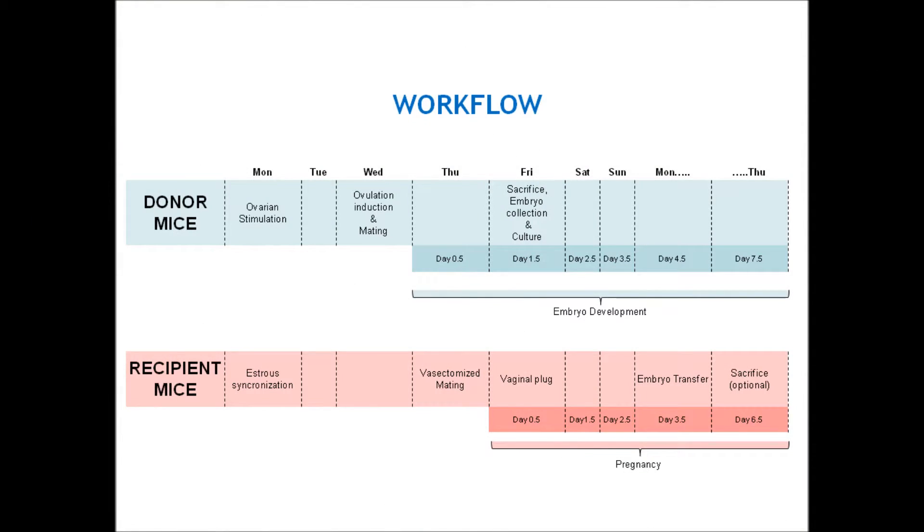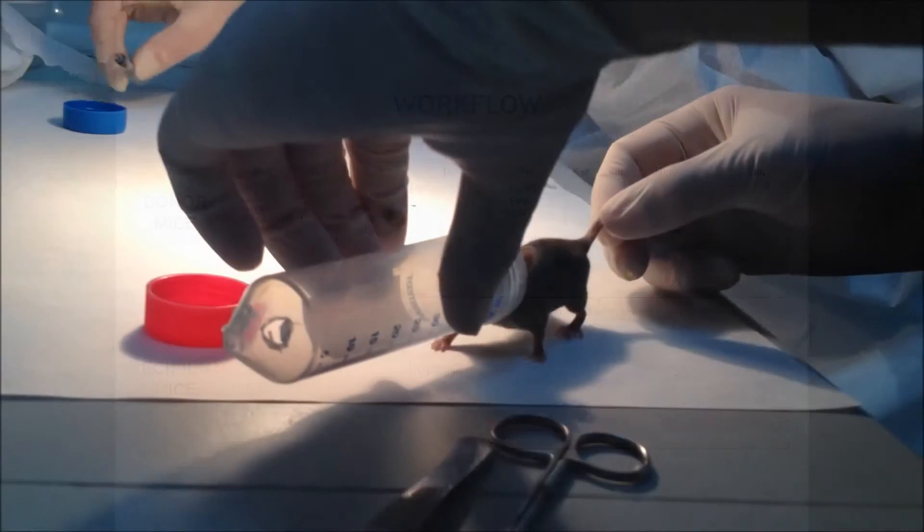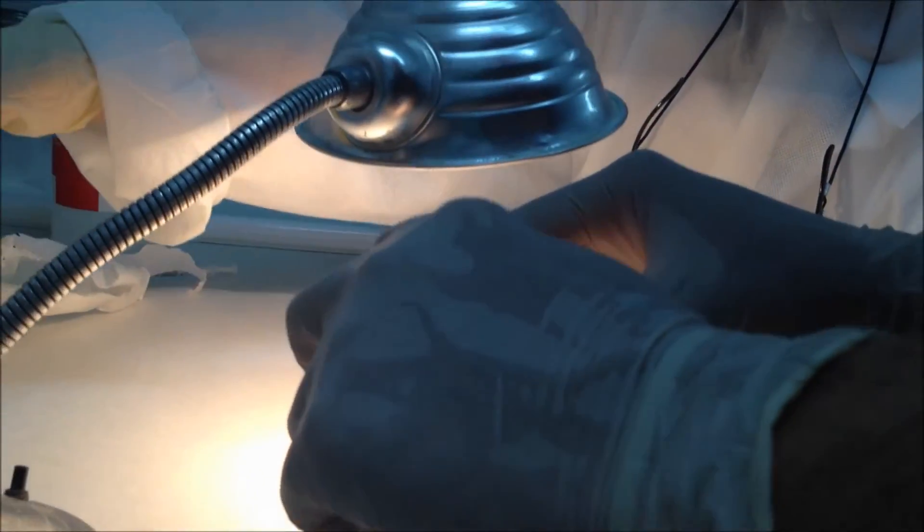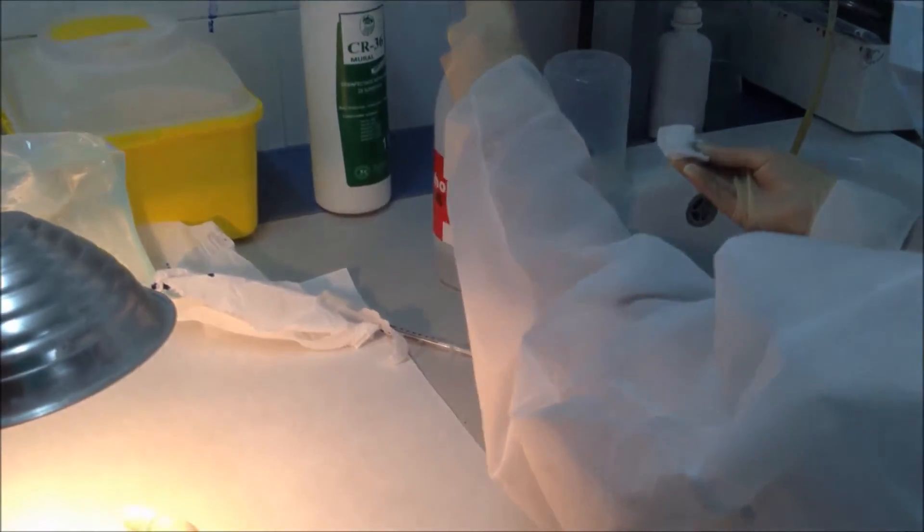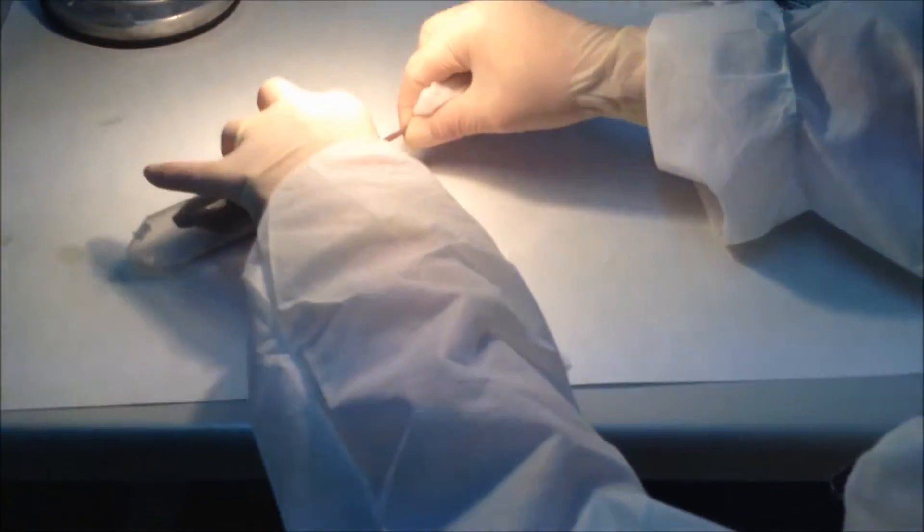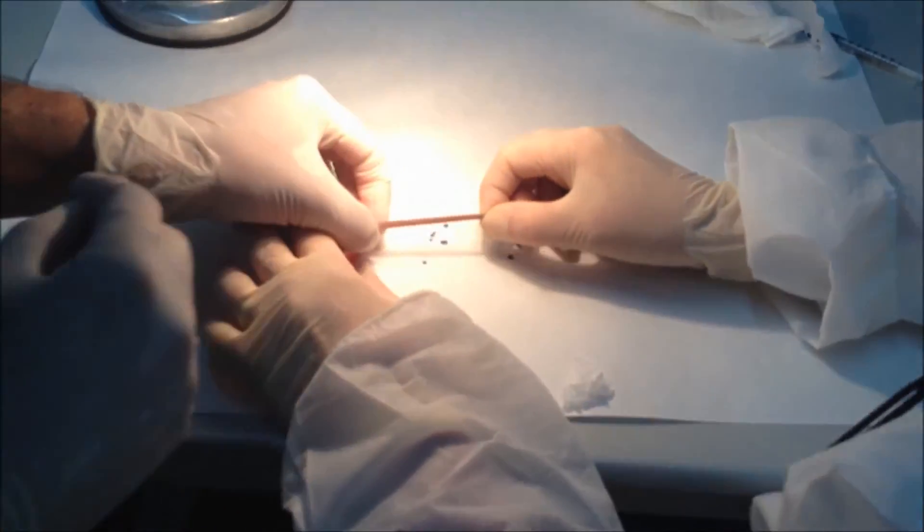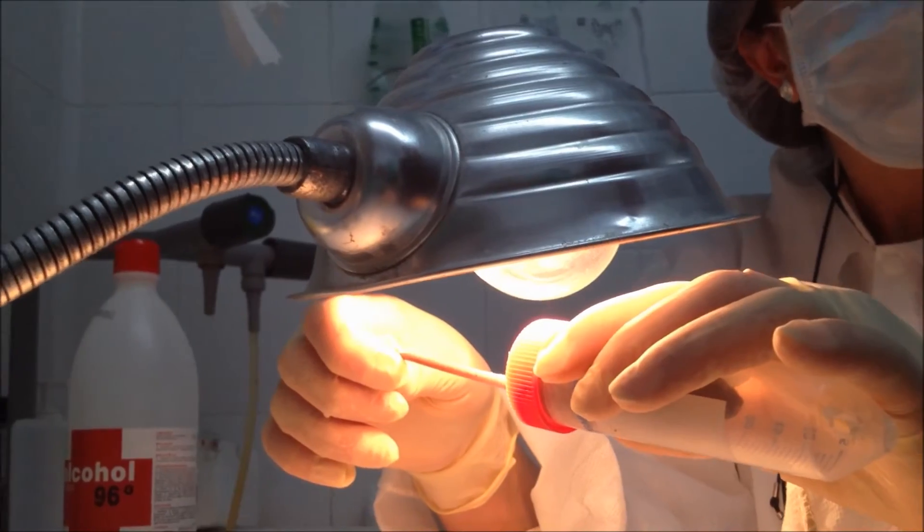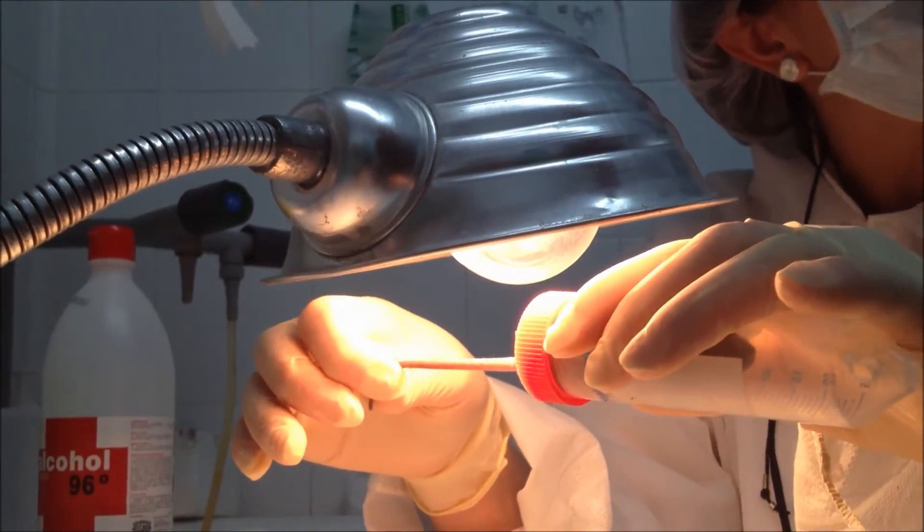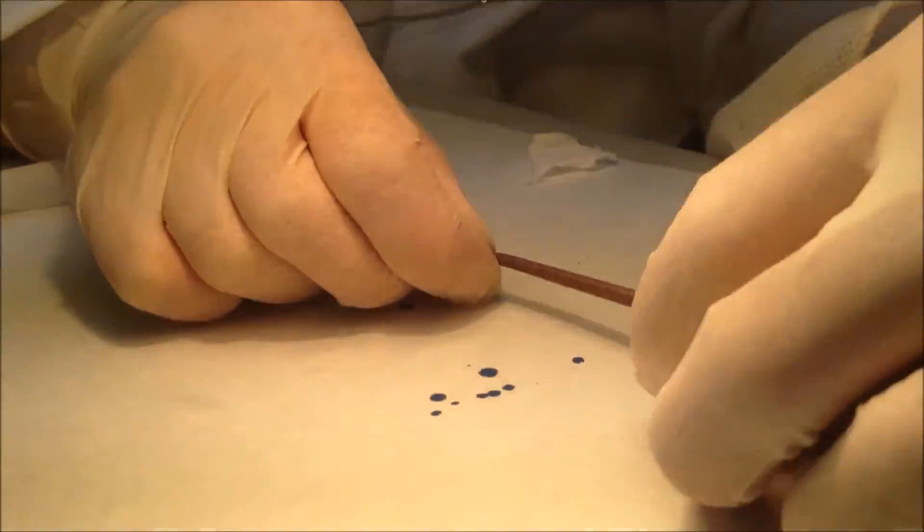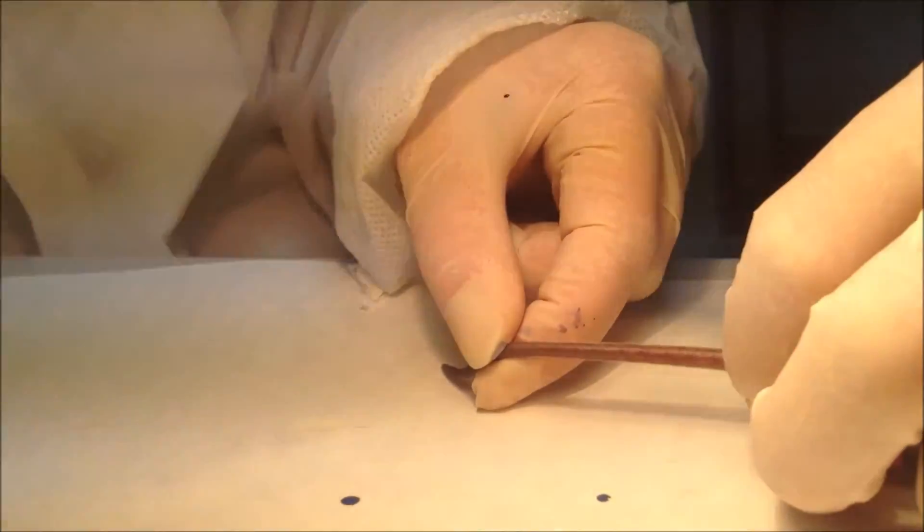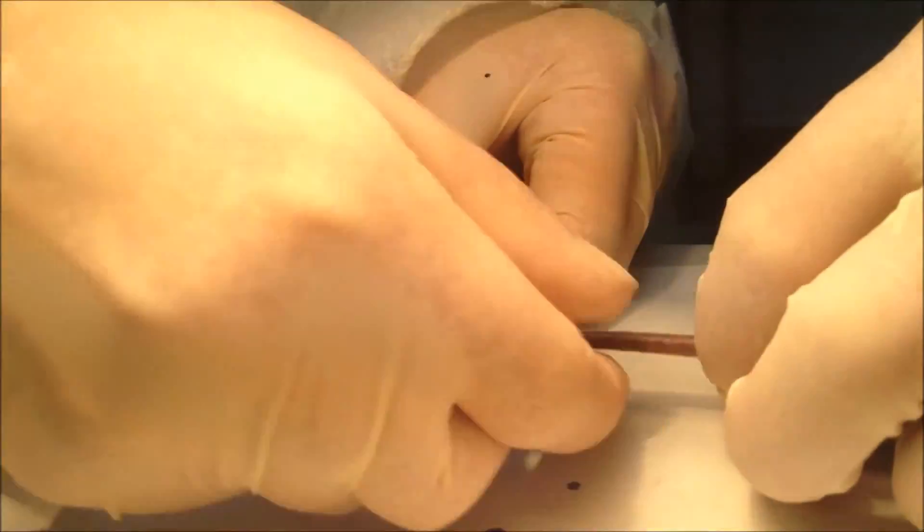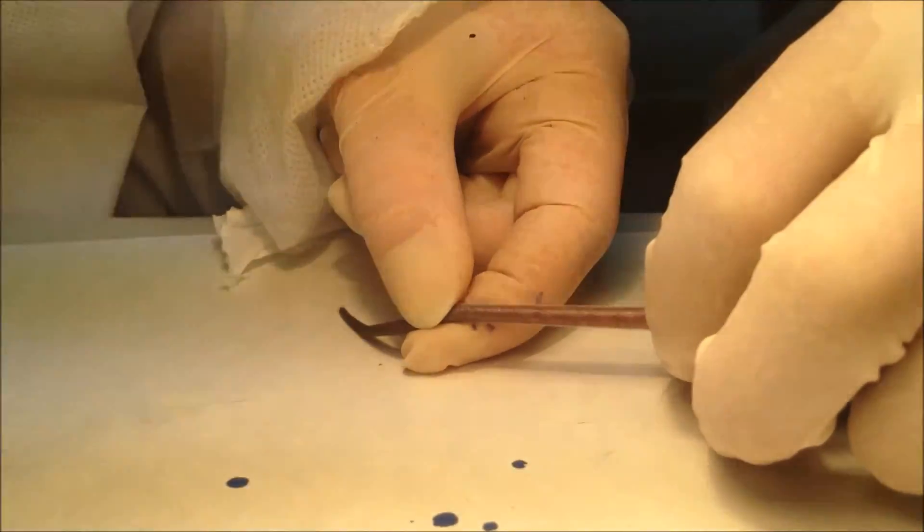First, inject 1% of Chicago Sky Blue 6B reagent into the tail vein. To better visualize the vein, carefully warm the mouse tail using a lamp. Inject 100 microliters of the Chicago Sky Blue 6B reagent.